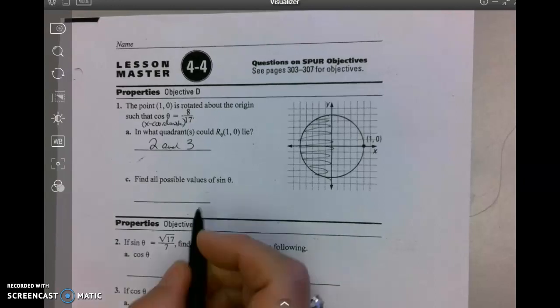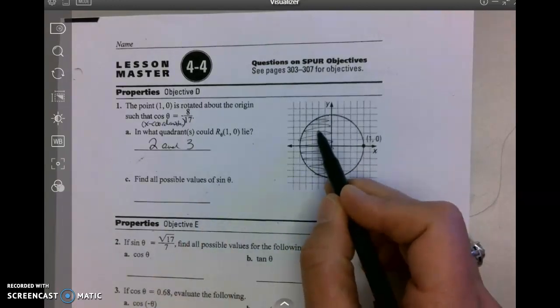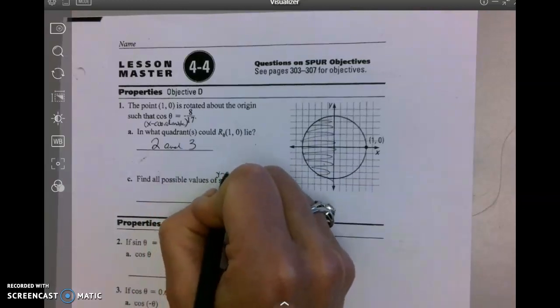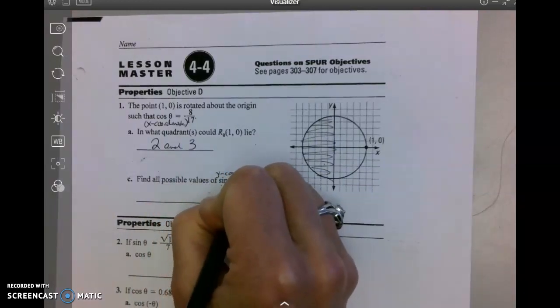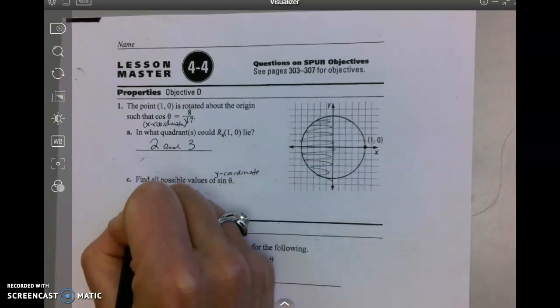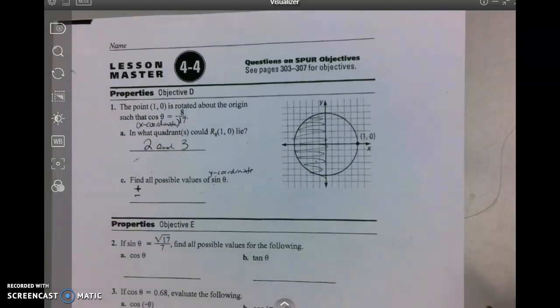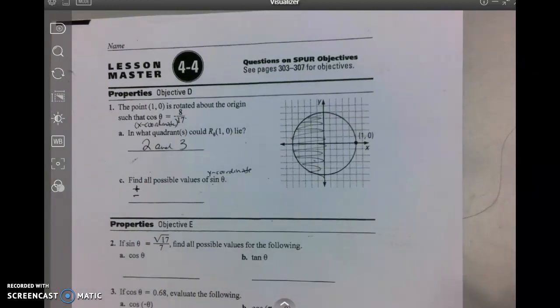Find all possible values of the sine of theta. On these two quadrants sine is the y coordinate. Well in quadrant two sine is positive and in quadrant three sine is negative. So I know that I have to have a positive and a negative answer.